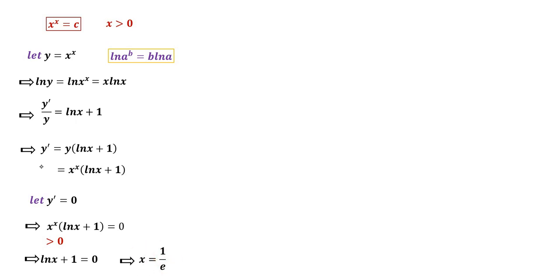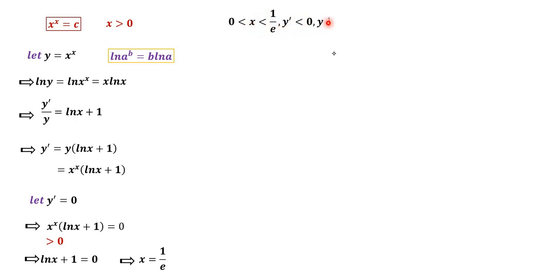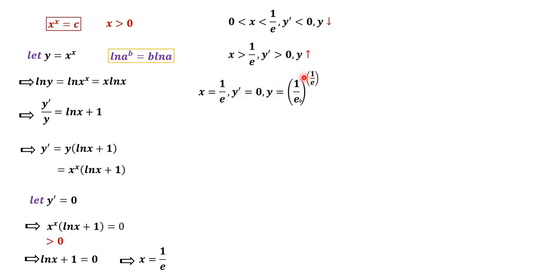So when x equals 1 over e, y prime equals 0. When x is between 0 and 1 over e, ln x + 1 is negative and x^x is positive, so y prime is negative — y decreases in this range. When x is greater than 1 over e, ln x + 1 is positive, so y prime is positive — y increases. At x equal to 1 over e, y equals (1/e)^(1/e), which is a local minimum.